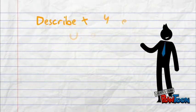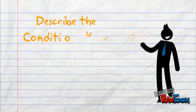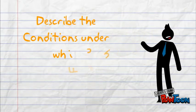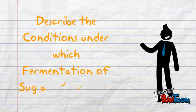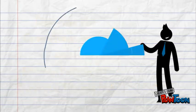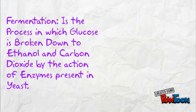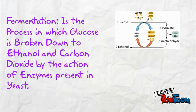What is fermentation and what does it have to do with ethanol? Fermentation is a process in which glucose is broken down to ethanol and carbon dioxide by the action of enzymes present in yeast.